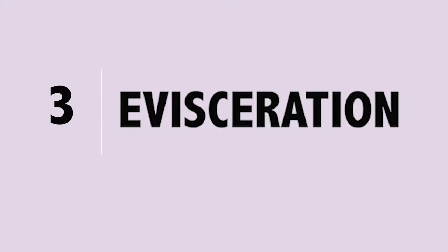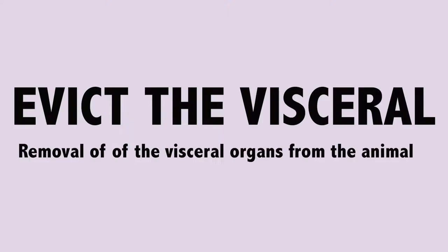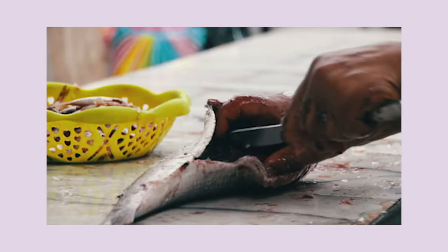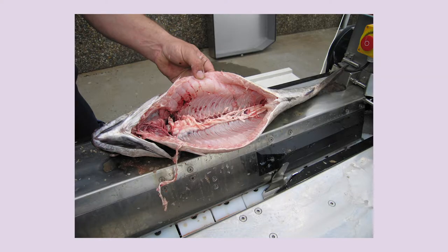The third term is evisceration. This word emerged from the word 'evis' — the visceral — or in other words, removal of the visceral organs from the animal. So if somebody asks you to eviscerate the fish, it means please remove the fish guts or all the internal organs from the fish.